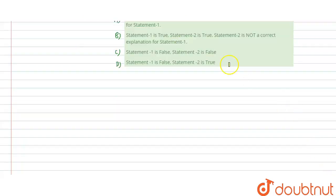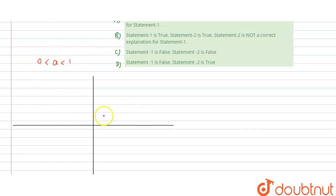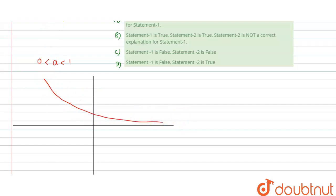First, we make the graph of y is equal to a raised to power x, where the condition given is a lies between 0 to 1. The graph of y = aˣ when a lies between 0 to 1 looks like this — it is a decreasing exponential curve.